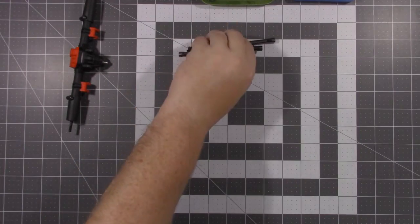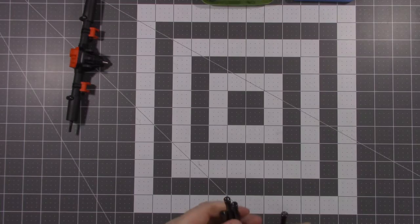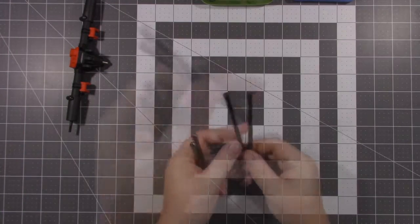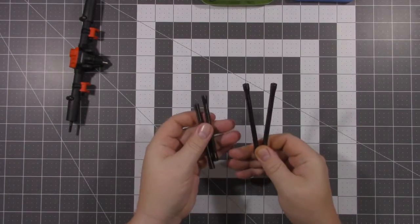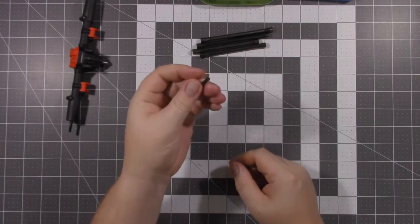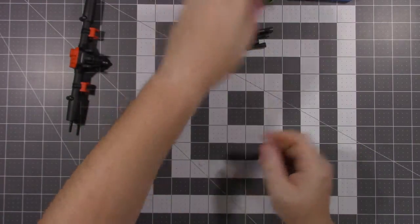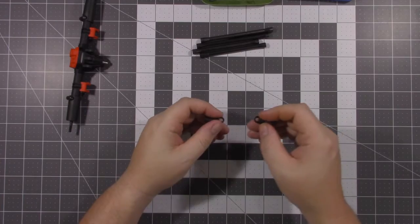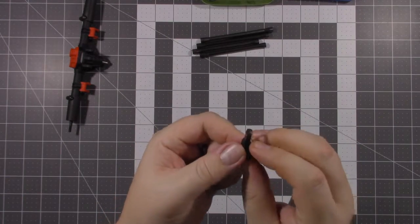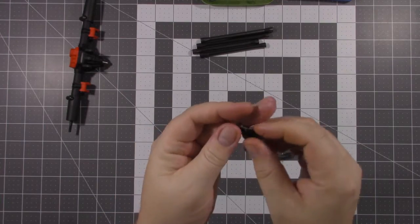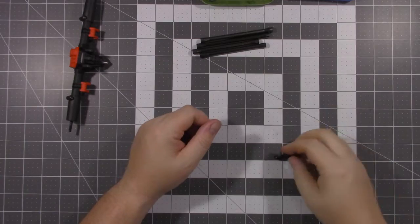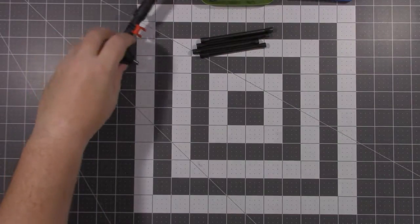Now for the rear links you're going to need your 101 and a half millimeter link shafts as well as the 93 millimeter link shafts and of course the hardware for it. You'll need one of each of the sideways bent link ends as well as one of the up and down bent link ends and the ball ends for those as well.